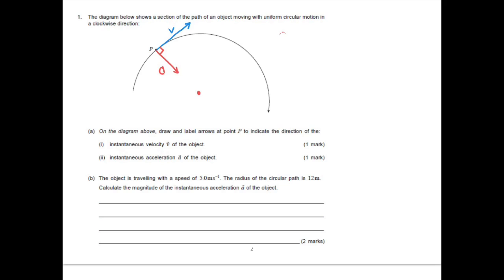In the calculation part, an object is travelling with a speed of 5 metres per second and the radius of the circular path is 12 metres. Calculate the magnitude of the instantaneous acceleration of the object. So a equals v squared over r equals 5.0 squared over 12, which equals 2.1 metres per second squared, or ms⁻².